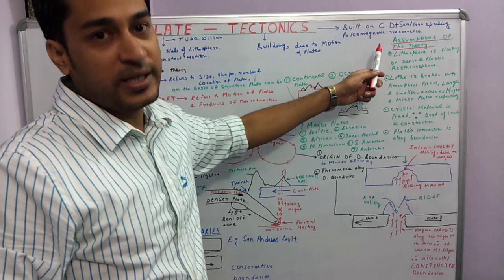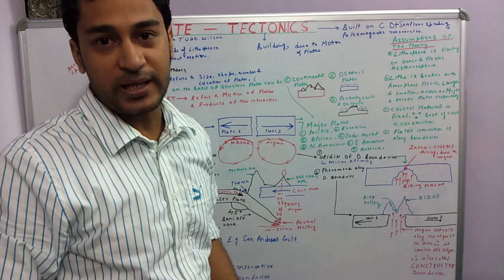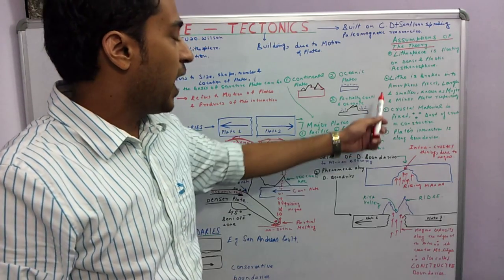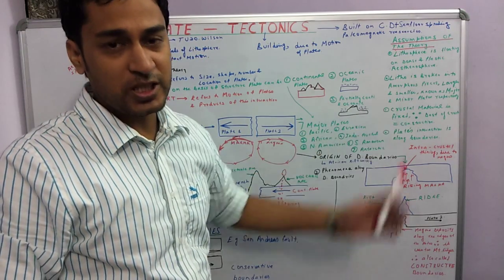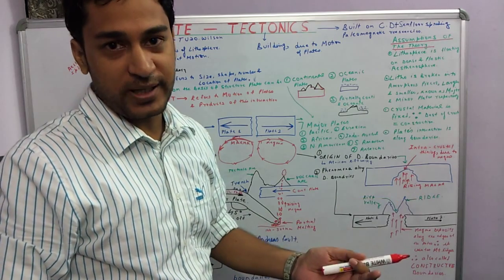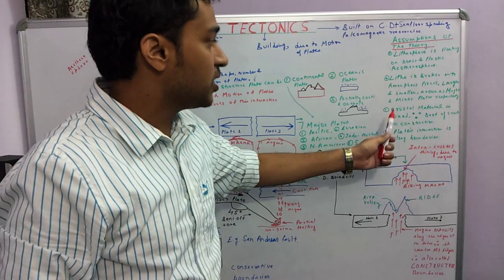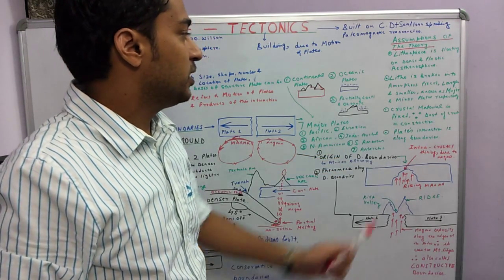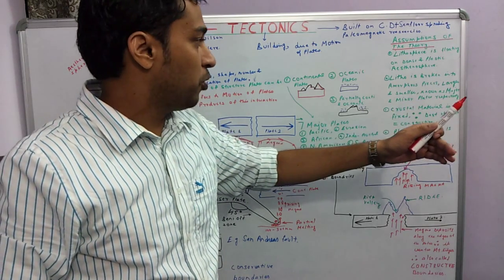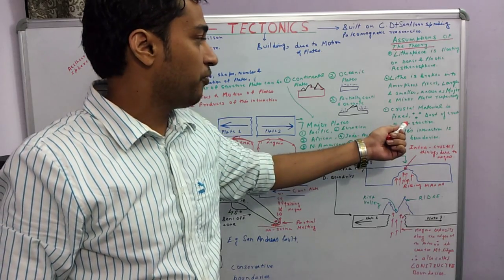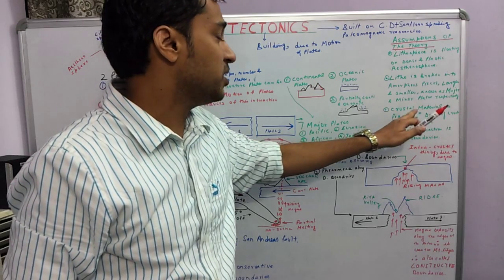Now this theory has certain assumptions. It assumes that the lithosphere is floating over the dense and plastic asthenosphere, and the lithosphere is broken into numerous pieces which are large and small, which make the major plates and the minor plates. The crustal material is fixed according to this theory. This means the destruction of crust which occurs along the converging boundaries and the construction of the crust which occurs along the diverging boundaries leads to constant crustal material.